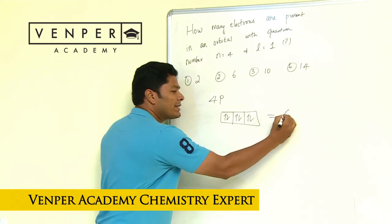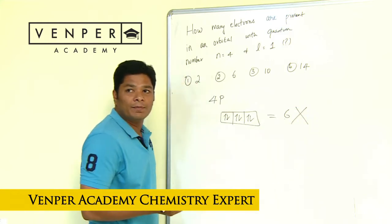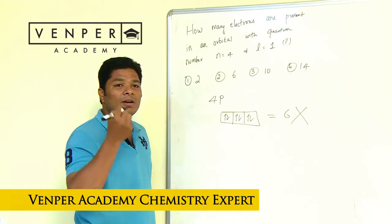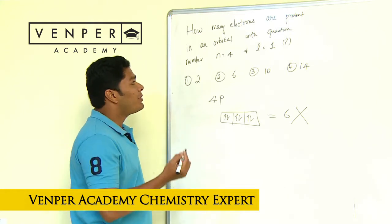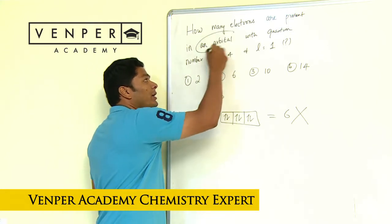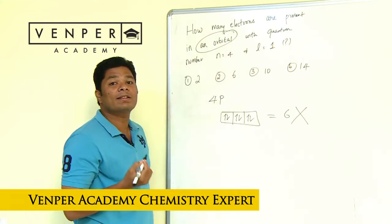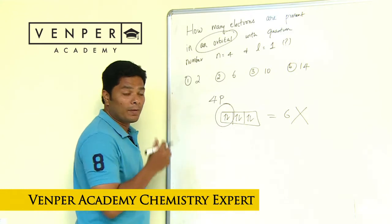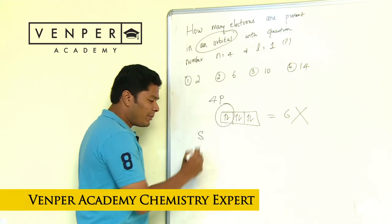The most commonly answered answer for this one is 6, and that's what NEET wants you to answer. The devil is in the details. What they want you to do is read the question right. How many electrons are present in an orbital? The key word here is an orbital. This is three orbitals, an orbital is just one.